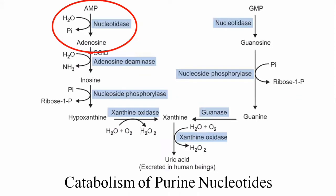Adenine monophosphate (AMP) is synthesized in the body through two synthetic pathways: the de novo synthetic pathway and the salvage synthetic pathway. AMP then passes through catabolic oxidative processes, and the final end product is uric acid. The formation of uric acid from AMP involves five step reactions, each with different enzymes.